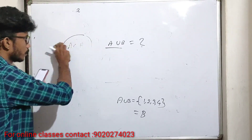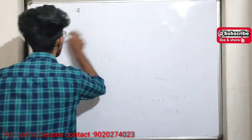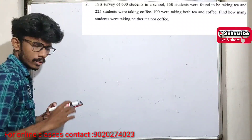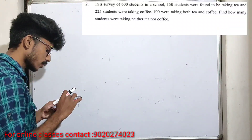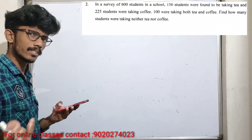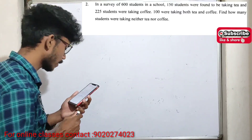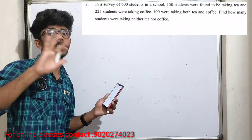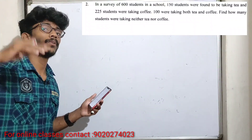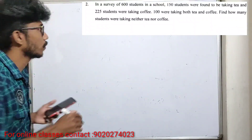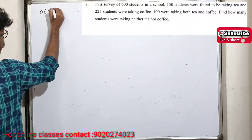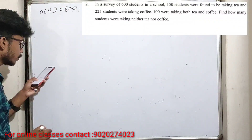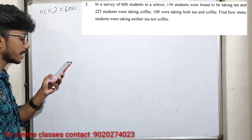Next is a problem using a Venn diagram or formula. We have a survey of 600 students in a school. The school is a total universal set. Total N(U) is 600. That is, 100 students were found to be taking tea.